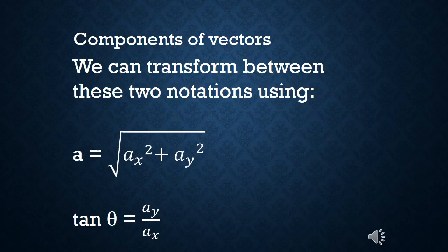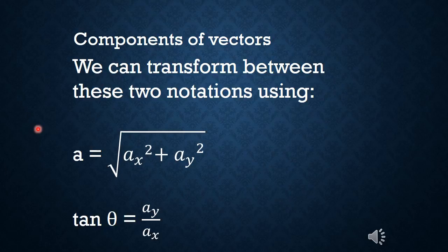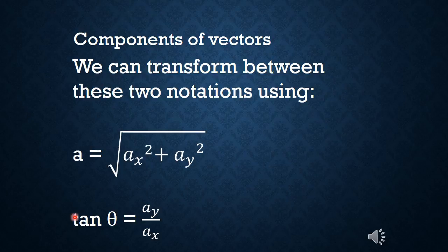We can go back and forth between component notation and magnitude-angle notation easily. The length of A is found using the Pythagorean theorem: A squared equals A sub x squared plus A sub y squared, so we take the square root of the sum of the squares of the two components. We can also find the angle theta using inverse tangent: since tangent of theta equals A sub y divided by A sub x, we can solve for theta. Or if we already know theta, we can use it to figure out how A sub y and A sub x relate.